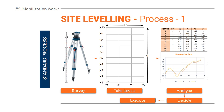After getting the staff readings at these grid points, we find the outward distances. The benchmark is set at every five feet. For this 45-foot plot, we have four lines on the y-axis: Y1, Y2, Y3, Y4. Based on these various readings, a graph is plotted and analyzed.